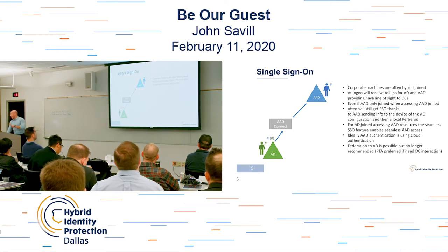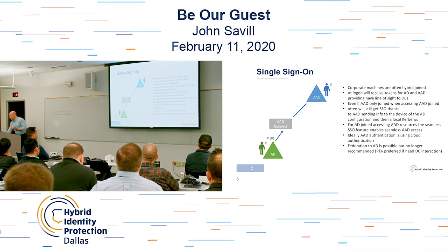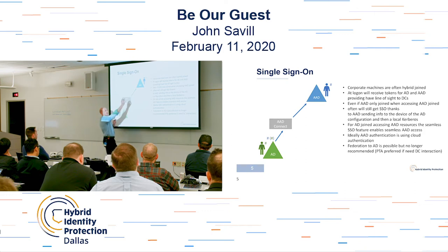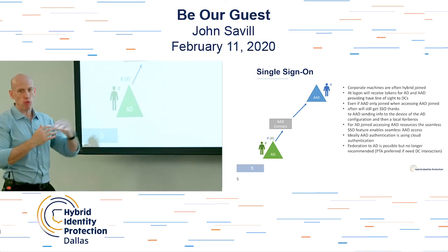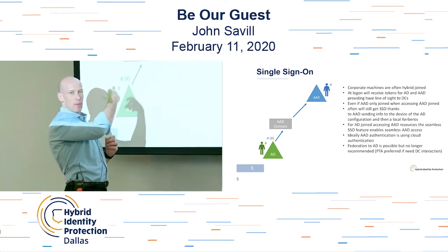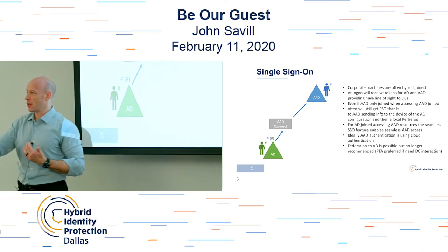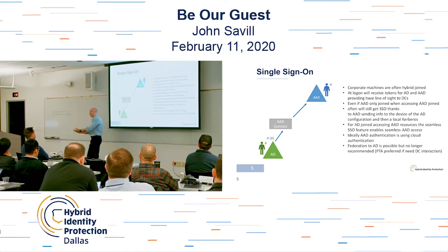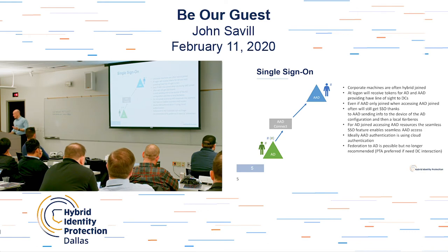Corporate machines are often hybrid-joined, so you get a token for both AD and Azure AD. The point is: even though there are two identities, you get a set of tokens that let you seamlessly interact — you're not prompted to authenticate again or retype your password. We used to push federation as the only way to get single sign-on between AD and the cloud. Now we have seamless sign-on, which gives the same experience on the corporate network with line of sight to a domain controller. So the messaging has changed — don't do federation.